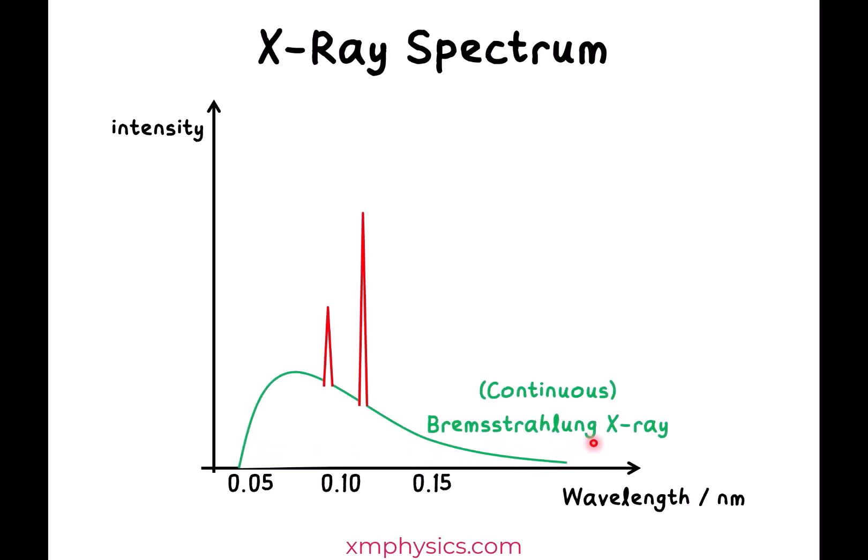This is called the Bremsstrahlung X-ray. Bremsstrahlung is a German word which means breaking, B-R-A-K-I-N-G. So this continuous spectrum is also called breaking radiation.